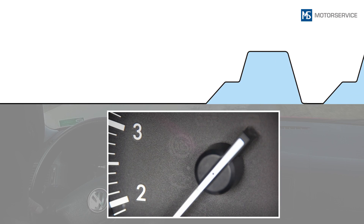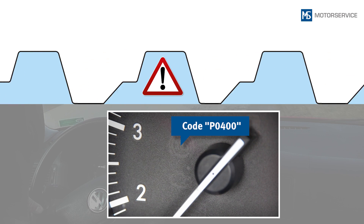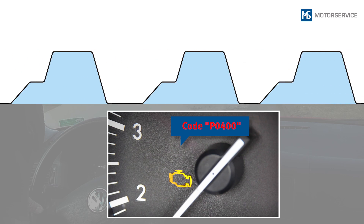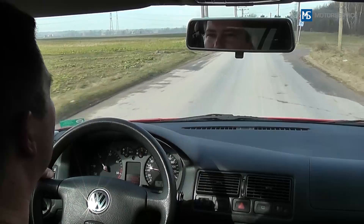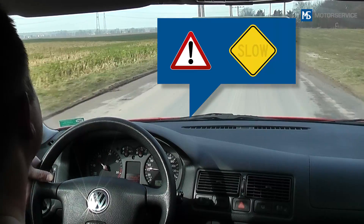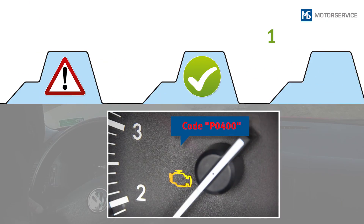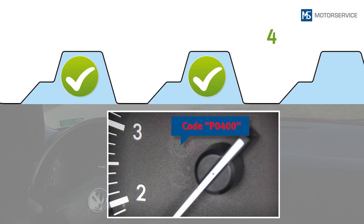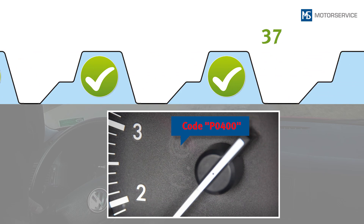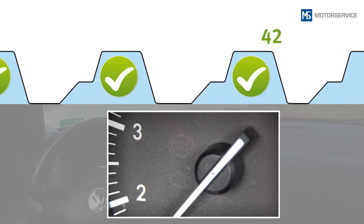Only if an error occurs in two consecutive driving cycles will the Diagnostic Trouble Code, or DTC, be saved as confirmed, causing the malfunction indicator lamp to light up. Depending on the severity of the error, limp home programs may be activated. If an error does not occur again, the malfunction indicator lamp will go out after three faultless driving cycles. After 40 faultless driving cycles, the DTC is also deleted from the OBD memory.